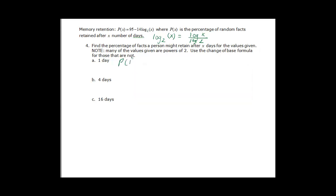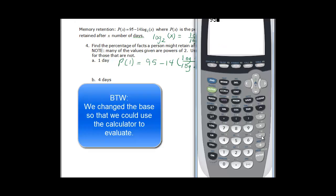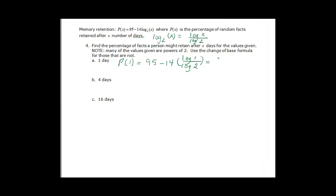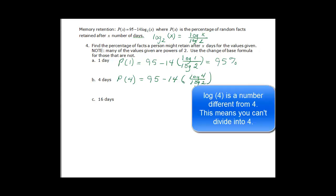So for one day we would have p of 1 is going to be equal to 95 minus 14 times the log of 1 over the log of 2. If we go to the calculator, we say 95 minus 14 and then in parenthesis we have log 1 divided by log 2, and we get 95, which means that the percent of retaining those random facts for one day is 95%. And so p of 4, again same thing. We just say log of 4 over log of 2. I don't think you can divide that 4 and 2 because remember log 4 is a number that's not 4.